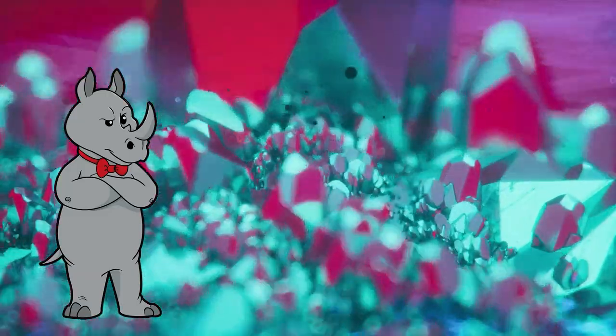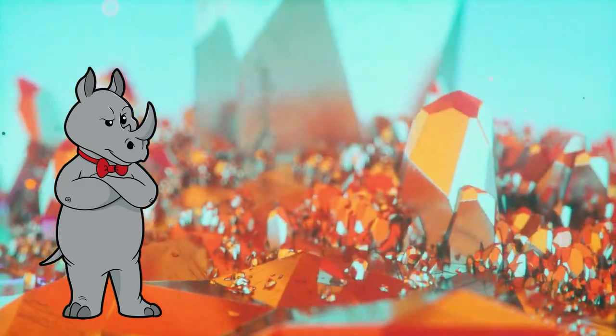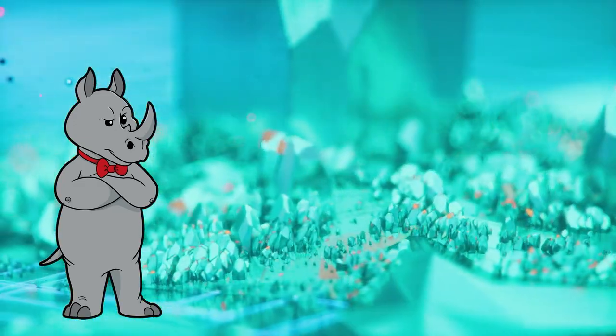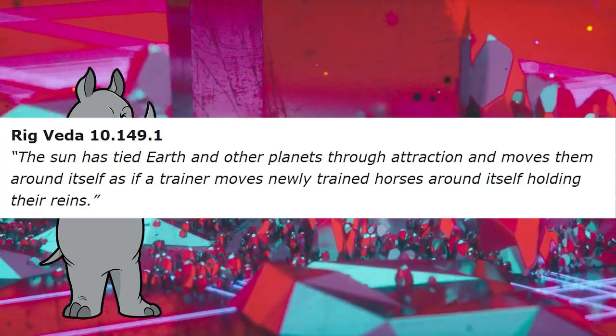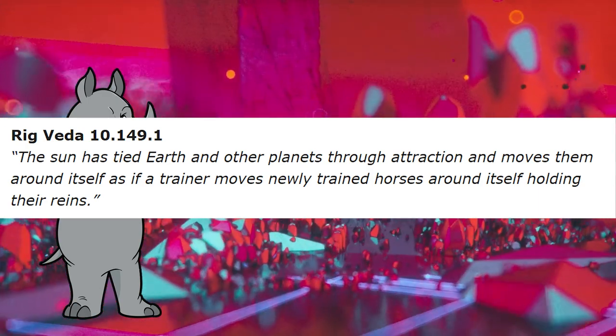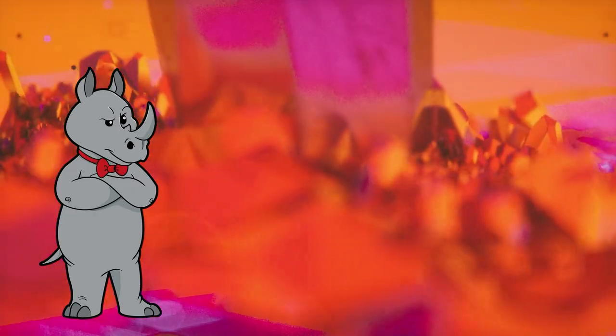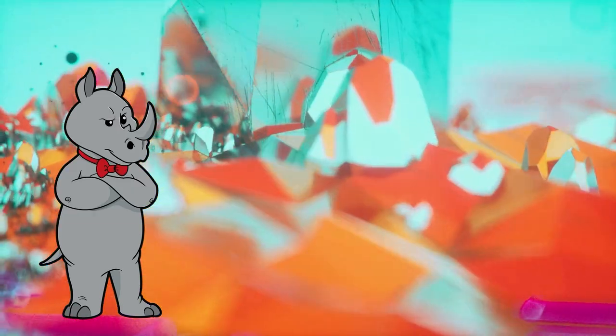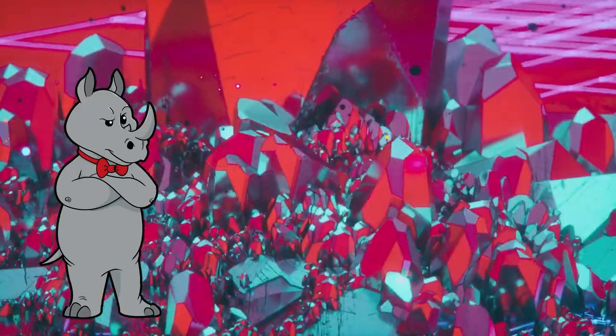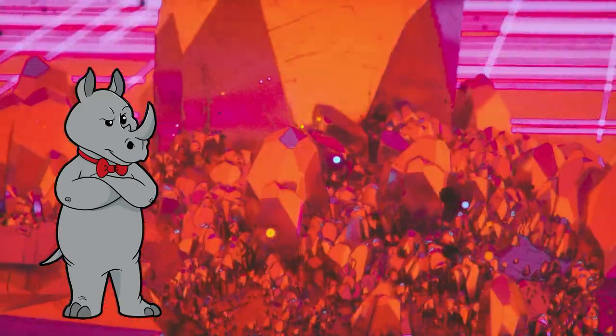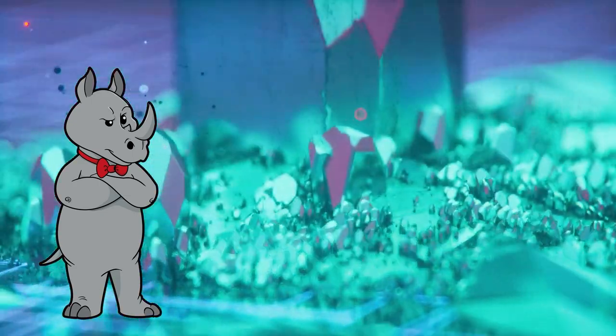If the Bible were actually being actively used to make new scientific discoveries, that might be a start. But it's not. And let's not forget that the Bible is not alone in being an ancient text that has said things that have later been interpreted as having been scientifically accurate, if you squint at it just right. The Rig Veda, for instance, says, The sun has tied the earth and other planets through attraction and moves them around itself as if a trainer moves newly trained horses around itself holding the reins. That sounds an awful lot like a superficially accurate description of gravity and orbital mechanics. And it was written around 1500 BCE. So it even predates your ridiculously early date for the earliest books of the Bible. Does this mean that the Rig Veda is divinely inspired? Or does it mean that sometimes meaning can be read into ancient texts that just wasn't there to begin with?